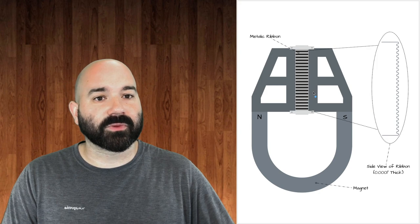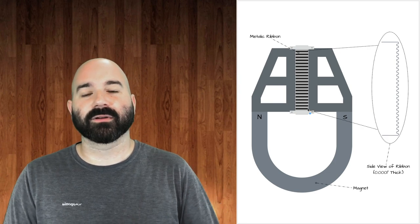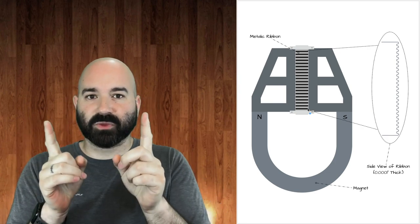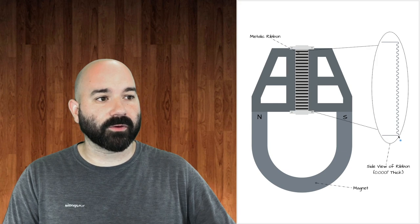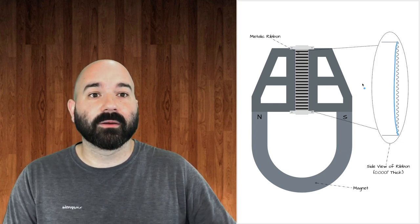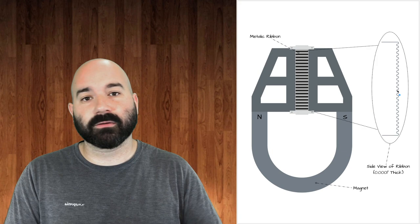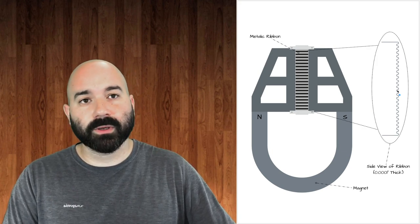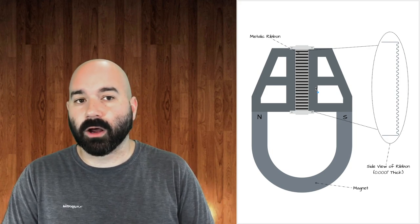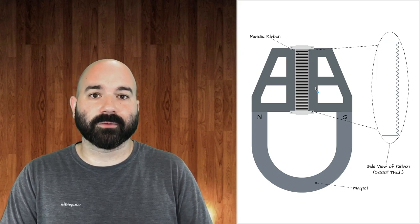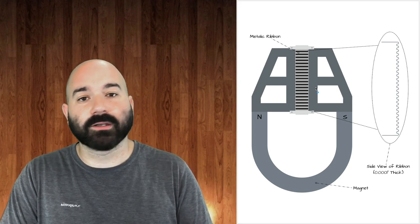Ribbon microphones are like a light bulb with a thin filament between two conductors. If you turn on phantom power to a ribbon microphone, it's like blowing out a light bulb—you'll break the ribbon. Some ribbon microphones have fail-safes that stop phantom power, but not all. So if you come across a ribbon microphone, remember two things: they're expensive and fragile—handle with care and do not use phantom power.